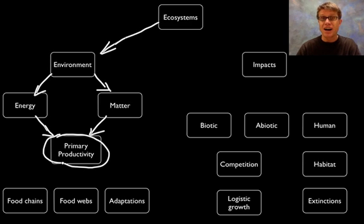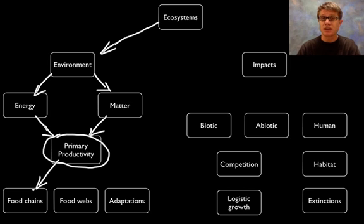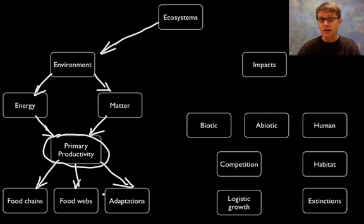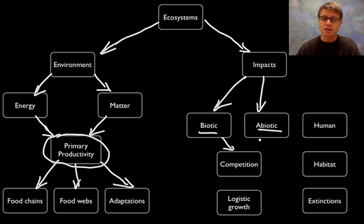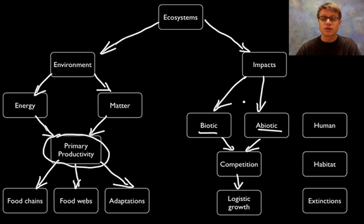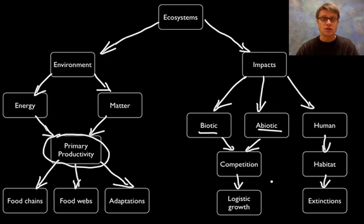Depending on where you are on the planet you have either a high or a low level of primary productivity. Basically, it's how much biomass the producers in an area are laying down. As a result we have these very complex reactions called food chains, and if we get more complex, that's called a food web. Every organism living in an ecosystem is adapted to that environment and its specific constraints. Sometimes there will be impacts — biotic or abiotic — which create competition. All populations are limited by the availability of resources, and so eventually all populations will undergo logistic growth. If we let things run naturally they tend to find equilibrium, but humans can make changes that have very quick impacts and sometimes lead to extinctions.